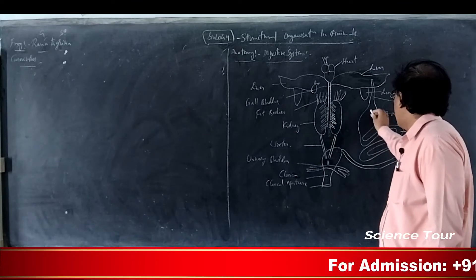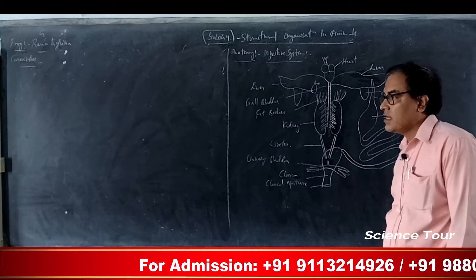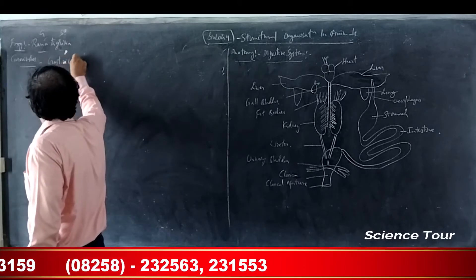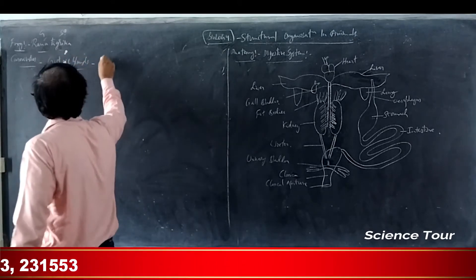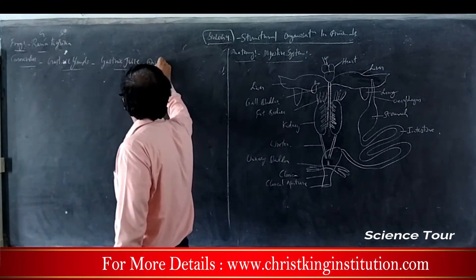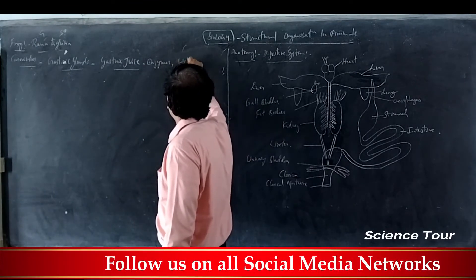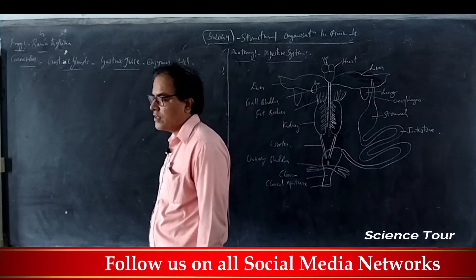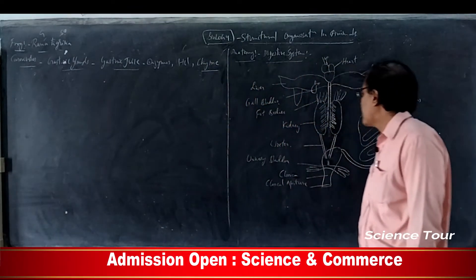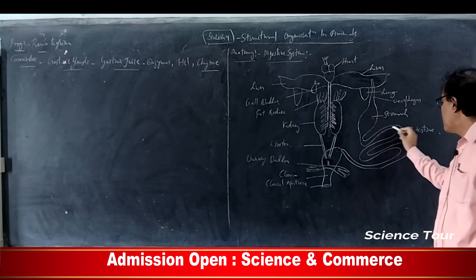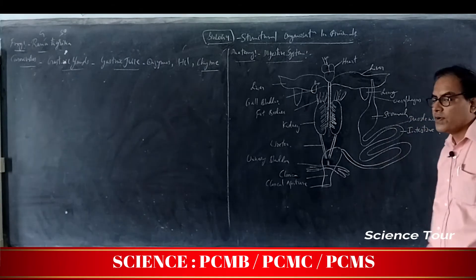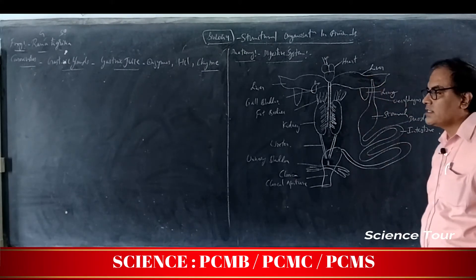The stomach has a sac-like structure; in its walls are gastric glands which secrete gastric juice containing enzymes and HCl, which help for digestion of food. Partially digested food is called chyme. This chyme passes from the stomach to the first part of the intestine called the duodenum. The liver is the largest digestive gland and secretes bile juice, which helps for emulsification of fat.